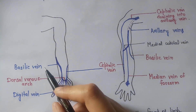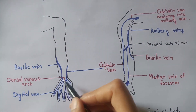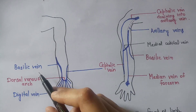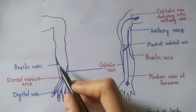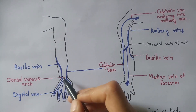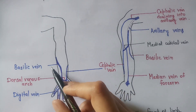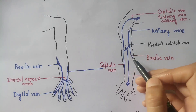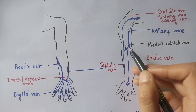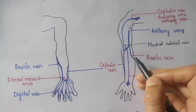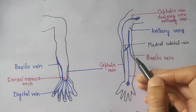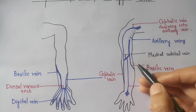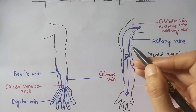The basilic vein begins at the medial end of the dorsal venous arch. It winds around the elbow, comes to the front at the elbow, and then runs upward.